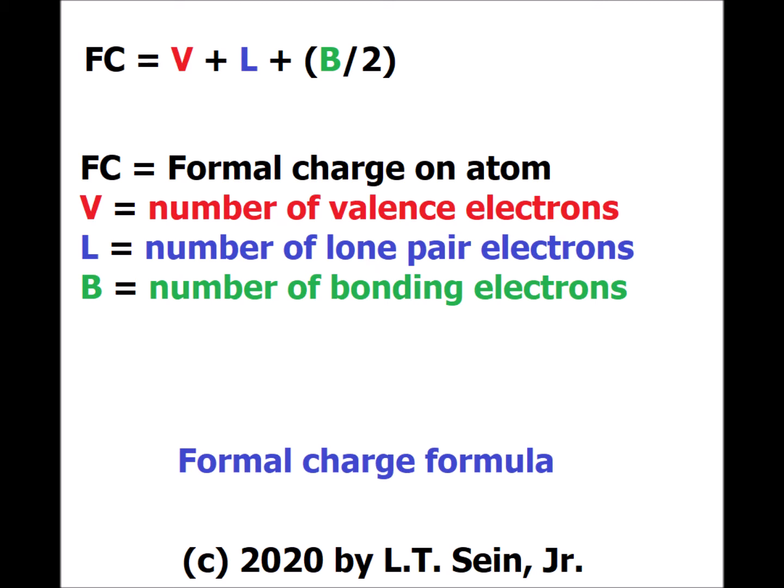The formal charge is equal to the number of valence electrons V, plus the number of lone pair electrons L, and then half of the bonding electrons. We can think of this informally as dividing the number of bonding electrons equally between both of the atoms that share them. Recall that in the Lewis-Langmuir theory, electrons can either be held by just one atom — in which case they are lone pair electrons — or they are shared between two atoms, in which case they are bonding electrons.